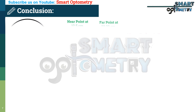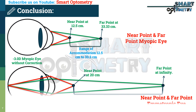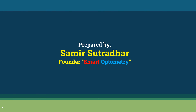In a myopic patient, the near point and far point are closer than those of an emmetropic eye. This is why myopic patients see more clearly at near compared to distance. Stay with Smart Optometry and study optometry smartly.